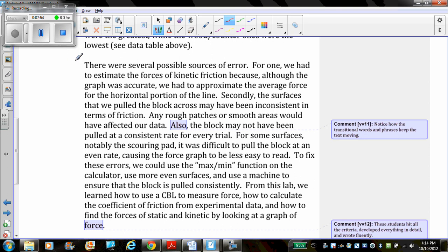There were several possible sources of error. For one, we had to estimate the forces of kinetic friction, because although the graph was accurate, we had to approximate the average force for the horizontal portion of the line. Secondly, the surfaces that we pulled the block across may have been inconsistent in terms of friction. Any rough patches or smooth areas would have affected our data. Also, the block may not have been pulled at a consistent rate for every trial. For some surfaces, notably the scouring pad, it was difficult to pull the block at an even rate, causing the force graph to be less easy to read.